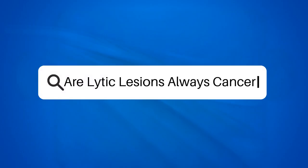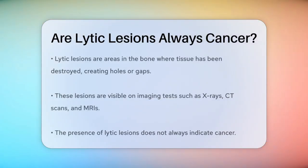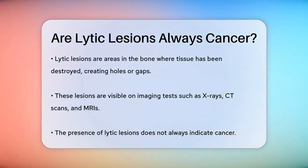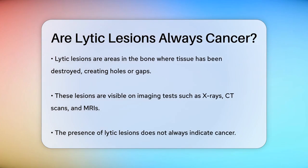Are lytic lesions always cancer? Have you ever wondered what lytic lesions are and whether they always indicate cancer? Let's break it down. Lytic lesions, also known as osteolytic lesions or bone lysis, are areas in the bone where tissue has been destroyed, leaving holes or gaps. These lesions can be seen on radiological images like X-rays, CT scans, or MRI.